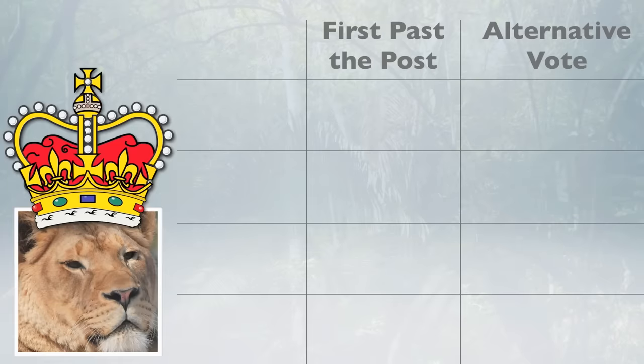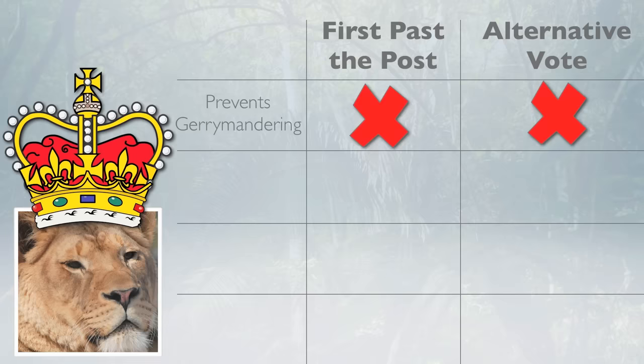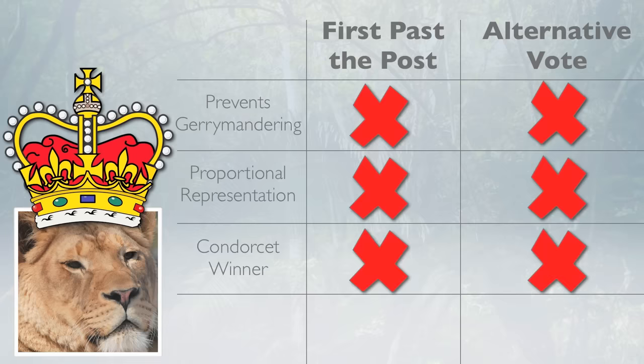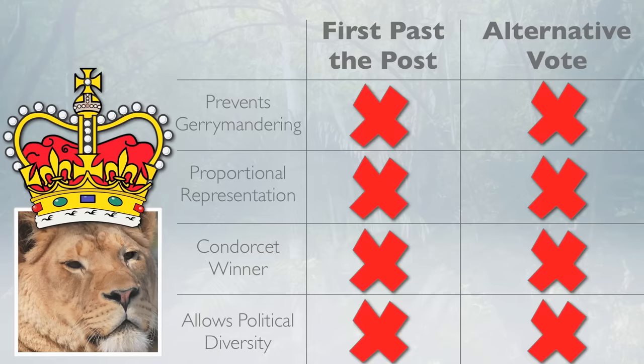The alternative vote is a better system because it produces winners that a larger number of voters can agree on. While the alternative vote does have its flaws, any problem AV has, first-past-the-post also shares. They're both susceptible to gerrymandering, they are not proportional systems, they can't guarantee a Condorcet winner — which math geeks hate but there isn't time to explain here — and over time they both trend toward two parties.